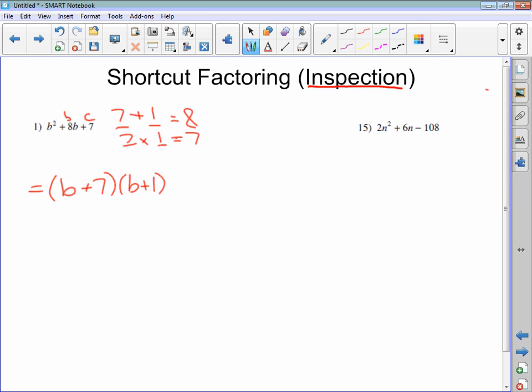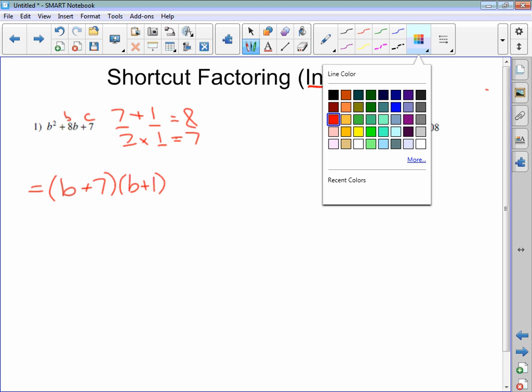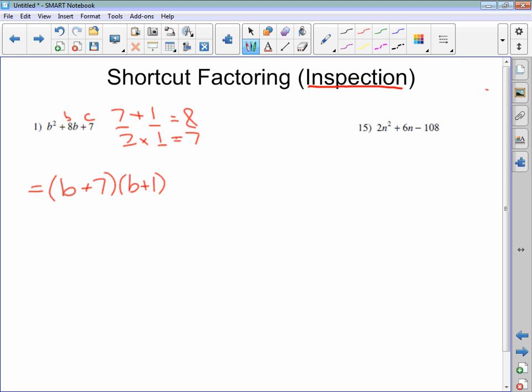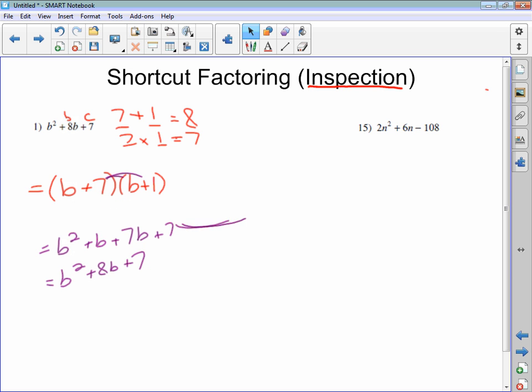Just like with the greatest common factoring, if you want to expand this to check, just do FOIL. So b times b is b squared, b times 1 is b, 7b, and 7. Hey, look at that. It ends up exactly where we started from. So the two factors are indeed b plus 7, b plus 1.